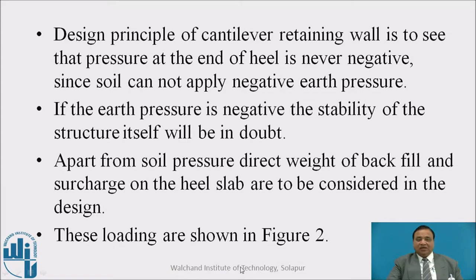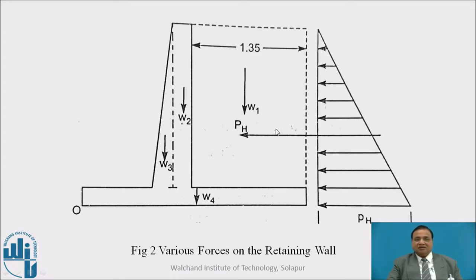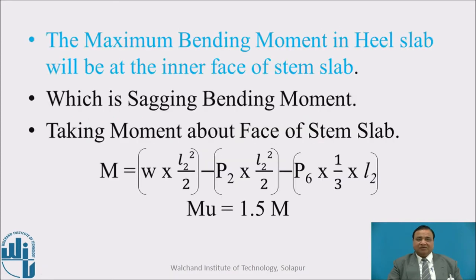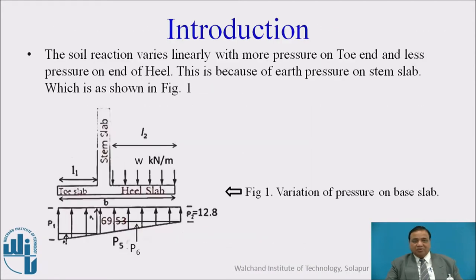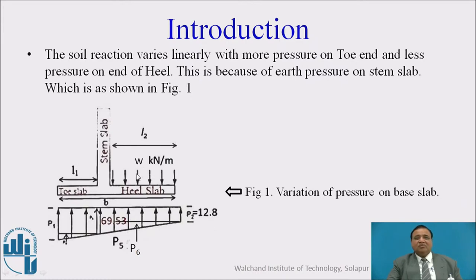These loadings are shown in figure 2. Here we see the earth pressure, which creates a force pH. This pH will try to overturn this particular retaining wall. Due to that effect, we find a maximum pressure on the toe side, which is P/A + M/Z, and a minimum pressure on the heel side, P/A - M/Z. This loading represents the weight of the earth fill and surcharge on the heel slab.